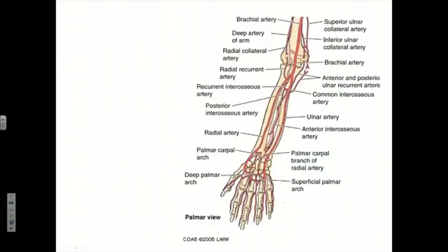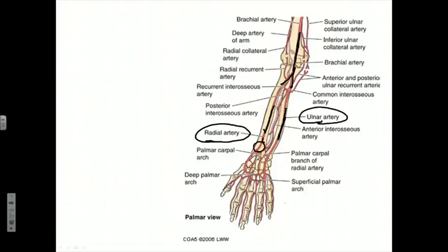The brachial artery, after coursing through the length of the arm, will bifurcate just distal to the cubital fossa into two tubes of approximately equal diameter: the radial artery, running on the superficial aspect of the radius, and the ulnar artery, running in close proximity to the ulna. The distal radial artery can be compressed against the anterior radius, providing a mechanism to detect a peripheral pulse.